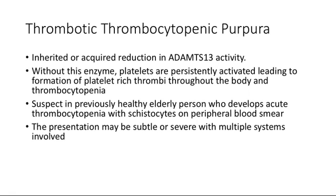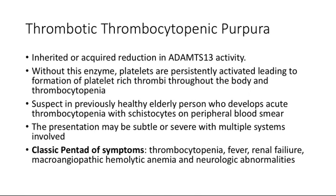There are many variations in how TTP can present. Anyone with thrombocytopenia plus fever, increased creatinine, or acute confusion should raise suspicion for this diagnosis. If you're given the full pentad — isolated thrombocytopenia, fever, renal failure, hemolytic anemia with schistocytes, and acute neurologic abnormalities like stroke or acute confusion — that's when they may ask about management. The mechanism of schistocyte formation is the platelet-rich thrombi breaking up red blood cells, and remember it's just platelets with TTP.